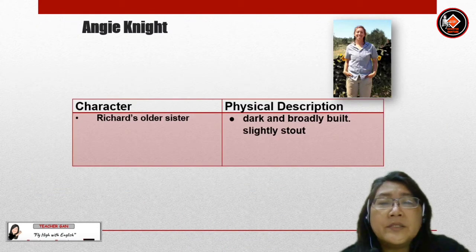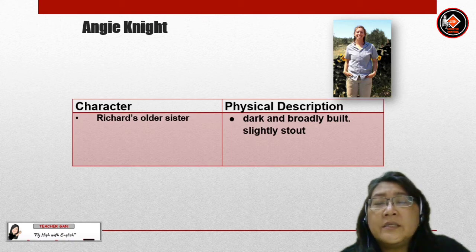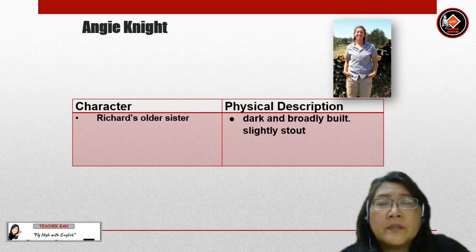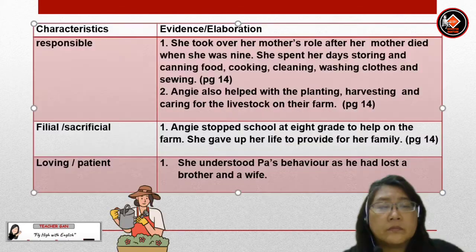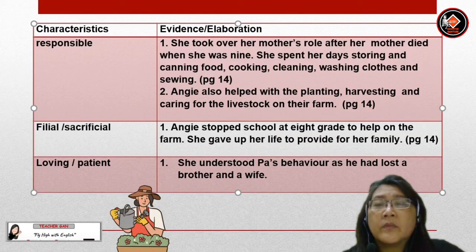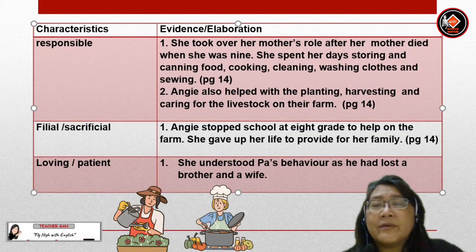Let's look at Angie Knight. Angie Knight is Richard's older sister. She is dark and broadly built and slightly stout. Let's look at Angie's characteristics.